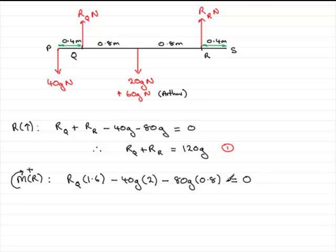So what we can do is just simplify this and solve for RQ. So we've got 1.6 RQ and then we've got minus 80g. And minus 80g times 0.8 is minus 64g. And that equals 0.